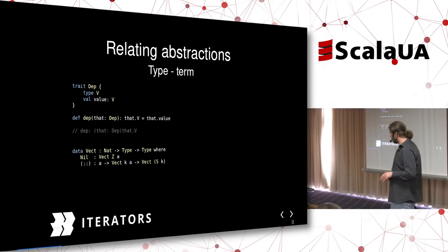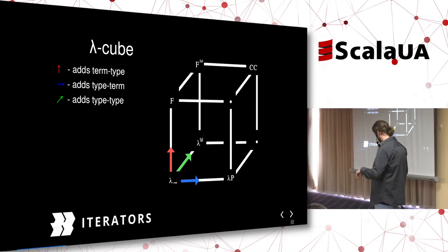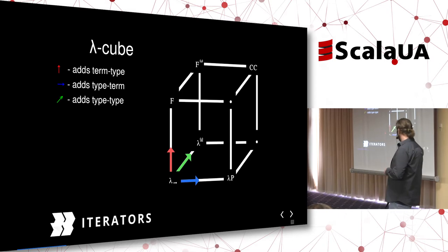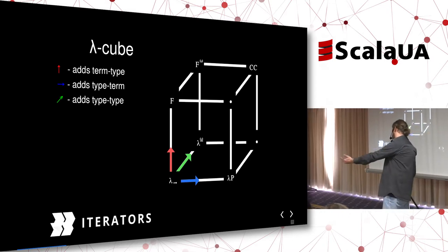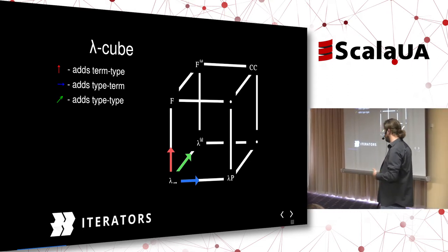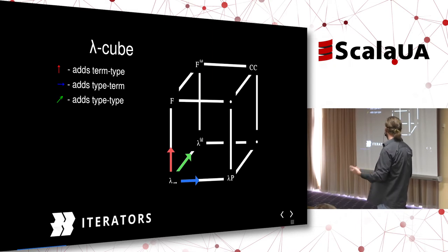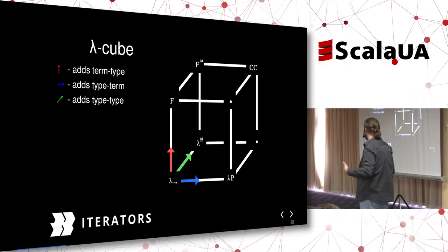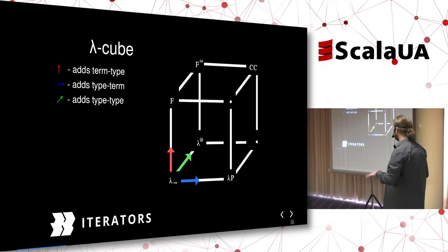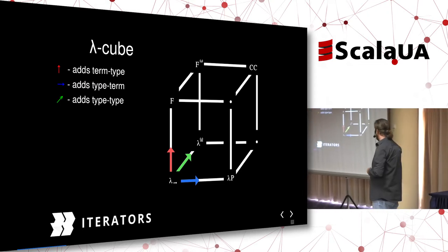These are the abstractions we can form. Starting at the bottom-left corner of the cube, traveling right adds type-to-term dependencies — dependent typing. Traveling upward adds parametric polymorphism. Traveling to the back adds type constructors. As you form various combinations, you get different type system families.